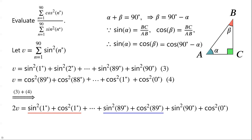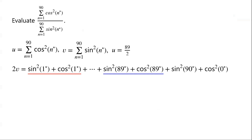Now adding expression 4 to expression 3, we have 2v equals sine squared of 1 degree plus cosine squared of 1 degree, plus so on, plus sine squared of 89 degrees plus cosine squared of 89 degrees, then plus sine squared of 90 degrees plus cosine squared of 0 degrees. By the Pythagorean identity, each pair equals 1. We know sine squared of 90 degrees equals 1 and cosine squared of 0 degrees equals 1. There are 89 Pythagorean identities, so 2v equals 89 plus 2, which is 91. Then v equals 91 over 2.